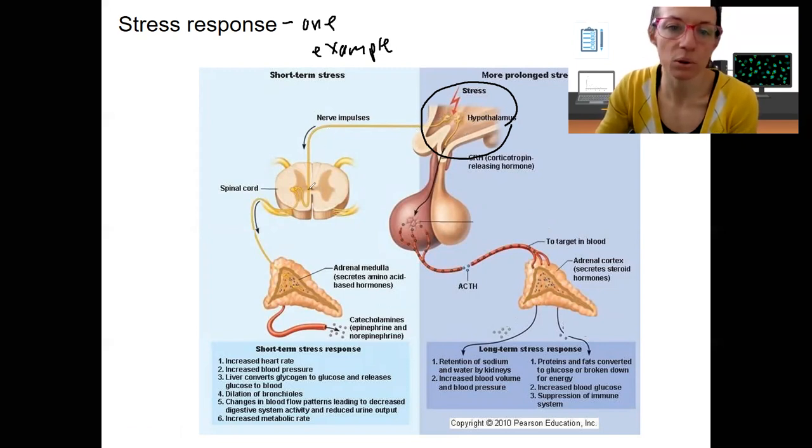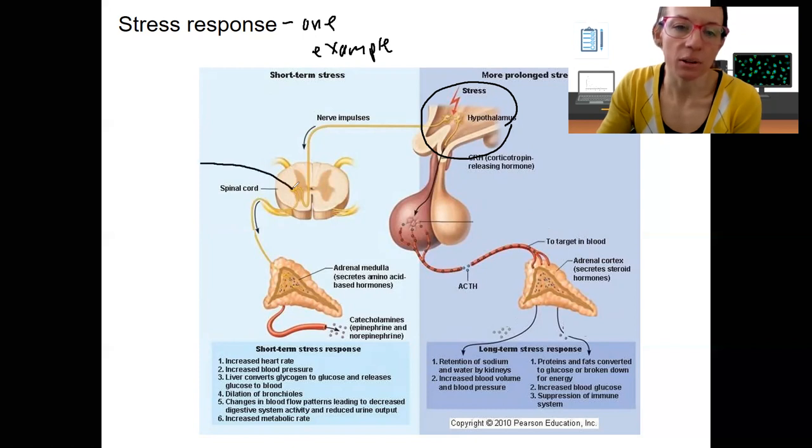These nerve impulses that go through the spinal cord and result in the adrenal medulla secreting, actually, hormones. What's not shown here as well is this actually will connect directly from the spinal cord to the heart and other target organs as well. So remember the whole autonomic nervous system response. It's not just the adrenal medulla.